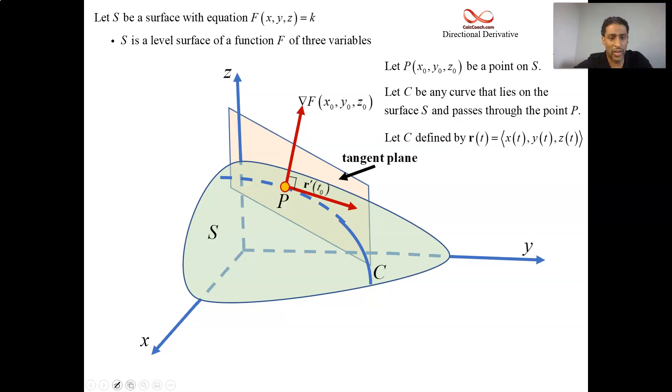Now, any point that's on the curve is also on the surface. So we can take the parametrization, the X, Y, and Z, and plug it into the function. We're going to take this function, which is capital F, plug in the X, Y, and Z, and it's set equal to K.